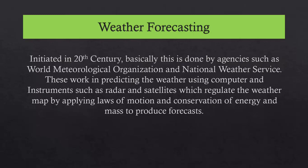What is weather forecasting? It was initiated in the 20th century. Basically it is done by agencies such as the World Meteorological Organization and the National Weather Service. These work in predicting the weather using computers and instruments such as radars and satellites, which regulate the weather map, applying laws of motion and conservation of energy and mass to produce forecasts.